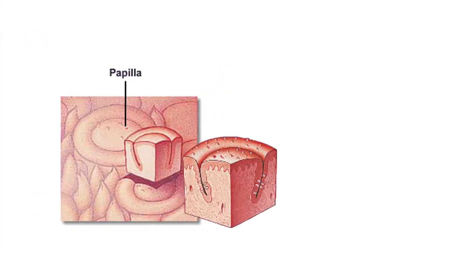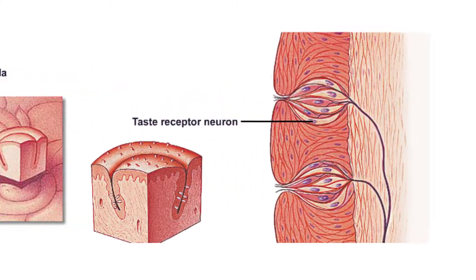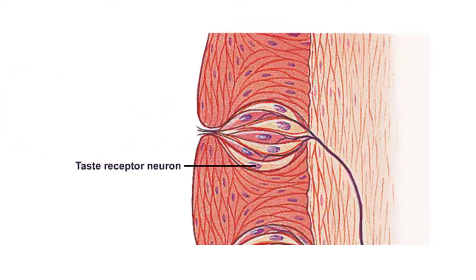Inside the papillae are about 5,000 to 10,000 taste buds that contain bundles of taste receptor neurons, and there are anywhere from 50 to 150 of these taste receptor cells in each taste bud. Taste receptors are a type of chemoreceptor which binds chemical substances dissolved in saliva that come from the foods you eat and the beverages you drink.